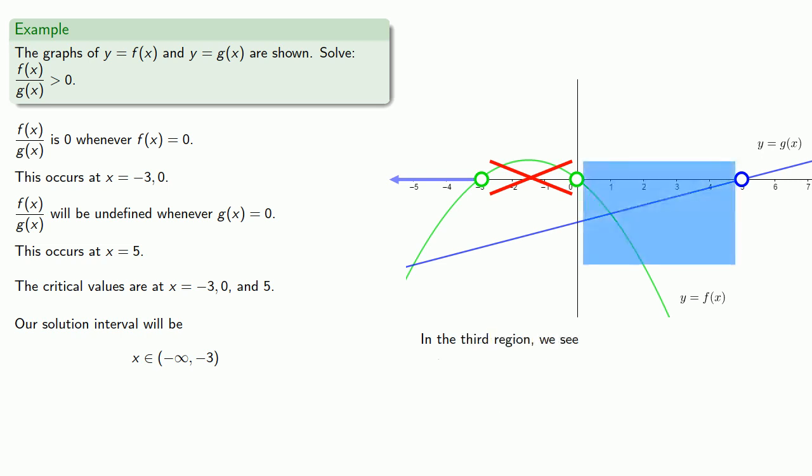This third interval runs from zero up to five. And here we see that f of x and g of x are both negative. And so their quotient will be positive. And we do want to include this region in our solution set.